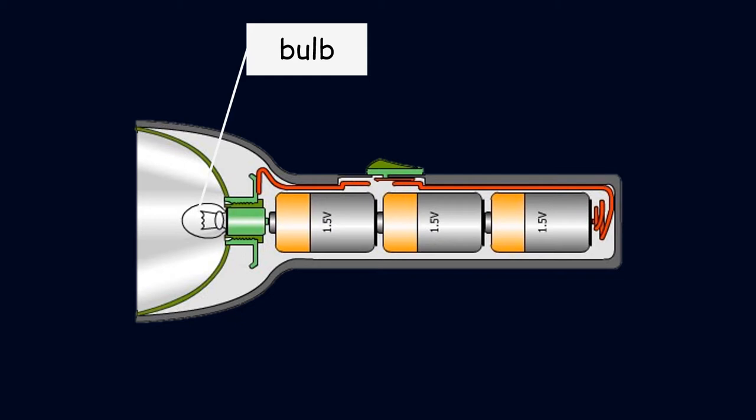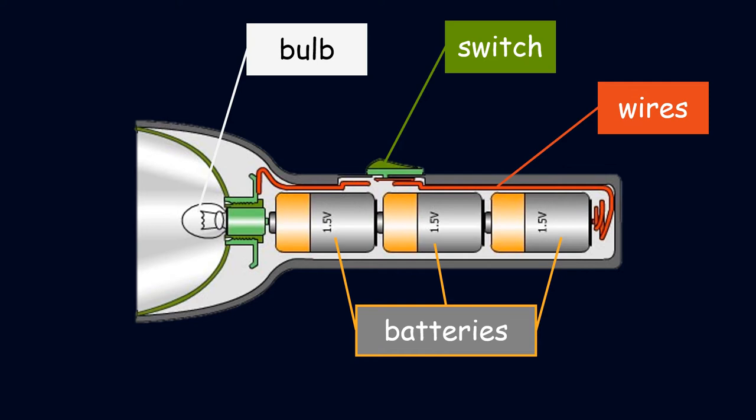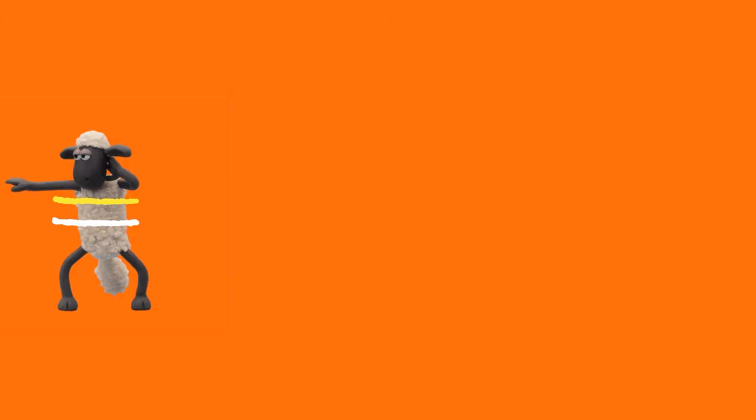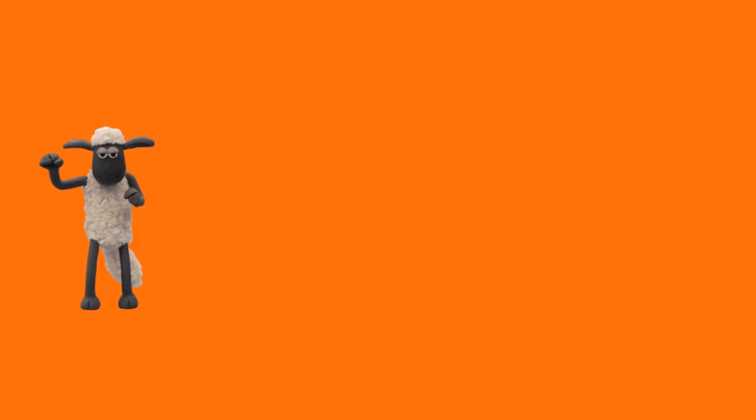For example, we have a torch. A torch is made up of a bulb, a switch, batteries, and connecting wires. Those parts must be connected for the torch to work.